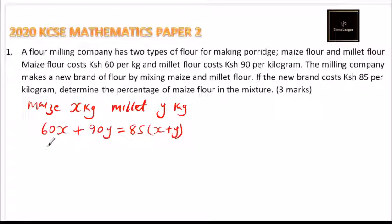With this, we can say 60X plus 90Y is equal to 85 times X plus Y, which is 85X plus 85Y.